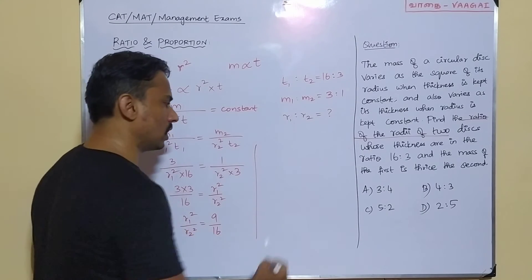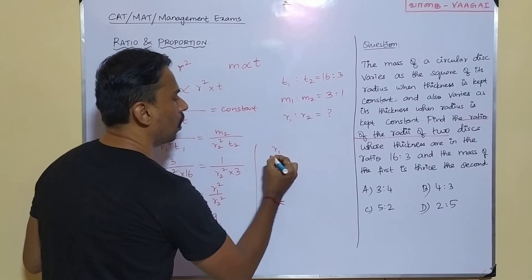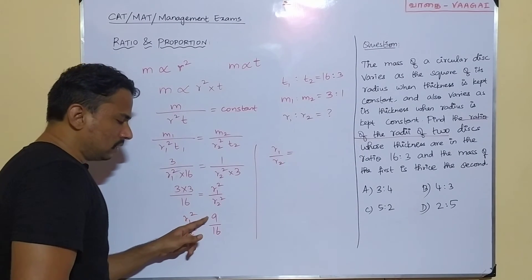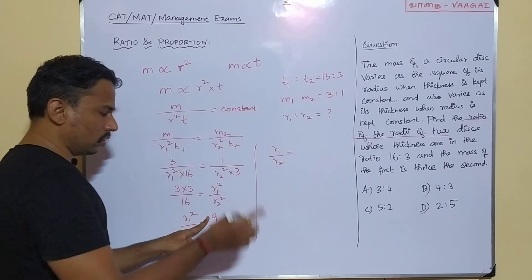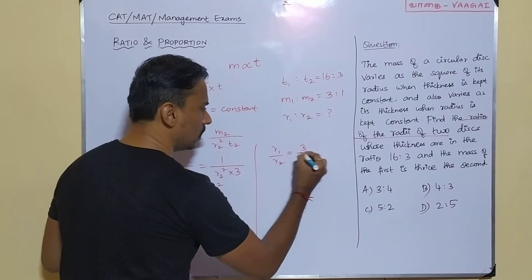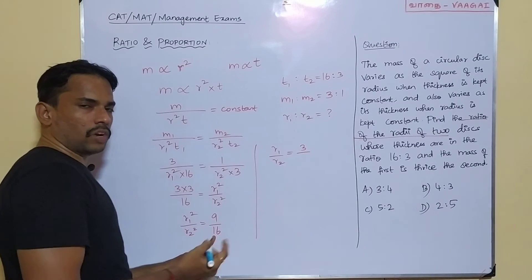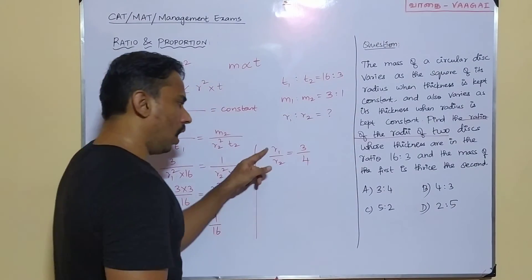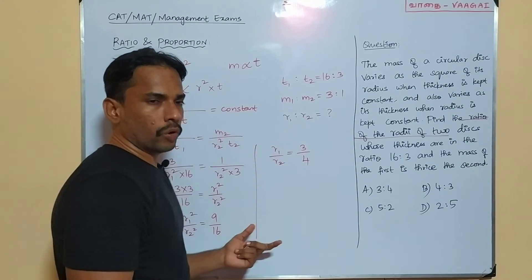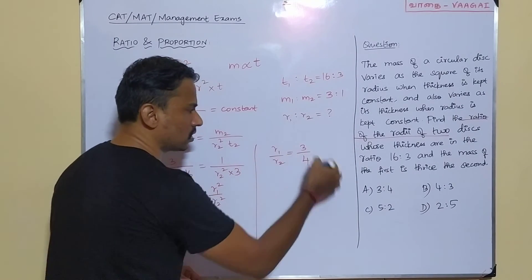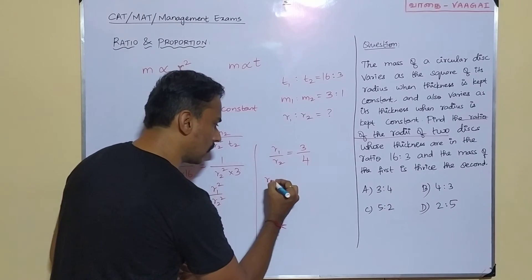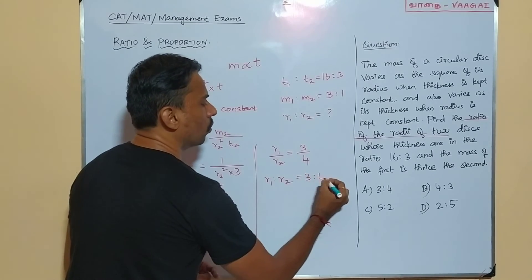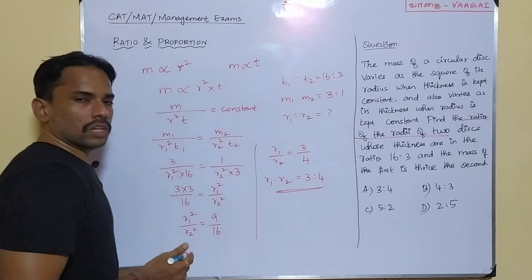When we take square roots on both sides, we get R1 by R2. The square root of 9 is 3 and the square root of 16 is 4. So R1 by R2 is equal to 3 by 4. Since this fraction equals 3 by 4, the ratio R1 is to R2 is equal to 3 is to 4. That is the answer.